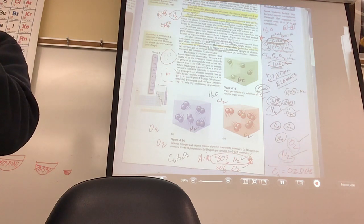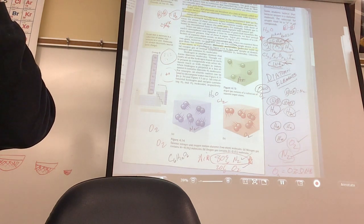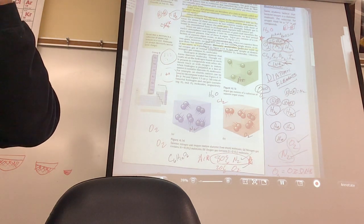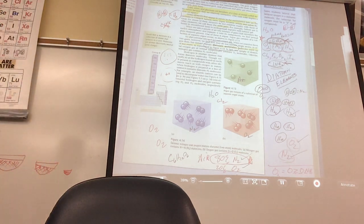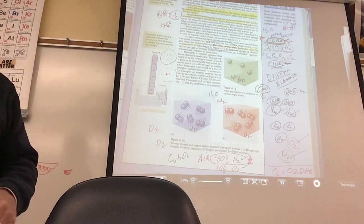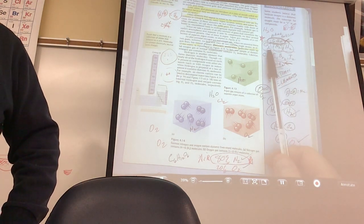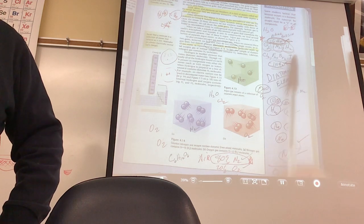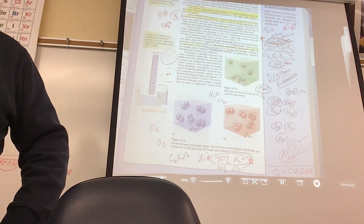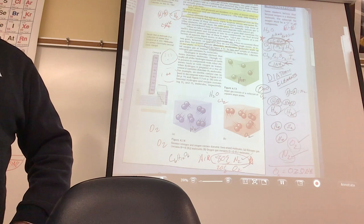What do you call elements that have two of the same atoms joined together into a molecule? Diatomic. How do you know which elements are the diatomic elements on the planet? The elements that end in -gen: oxygen, hydrogen, nitrogen, and the ones that end in -ene: chlorine, bromine, fluorine, iodine. Everybody get that?